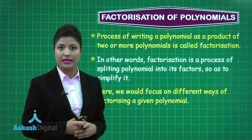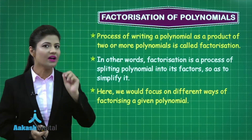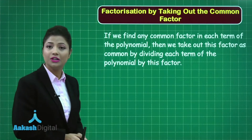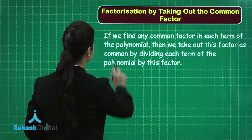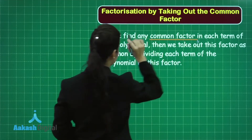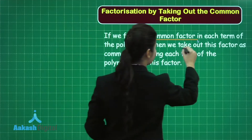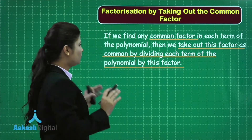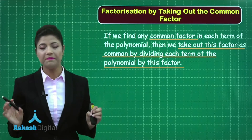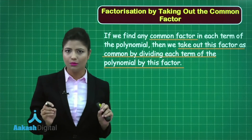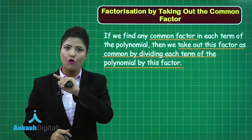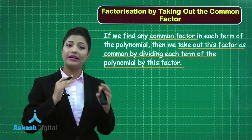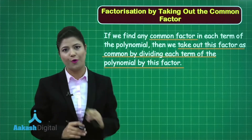The first type of factorization method is factorization by taking out the common factor. If we find any common factor in each term of the polynomial, we take it out by dividing each term by that factor. You observe each and every term of the polynomial, identify the common term, and divide each term by it.